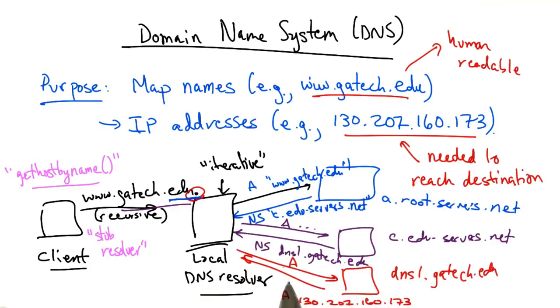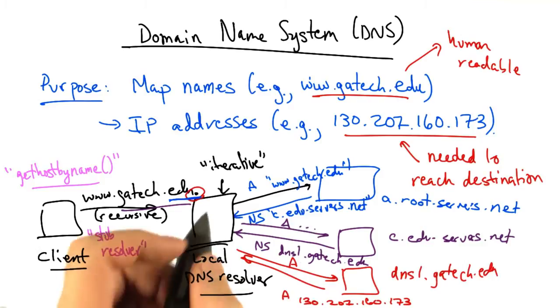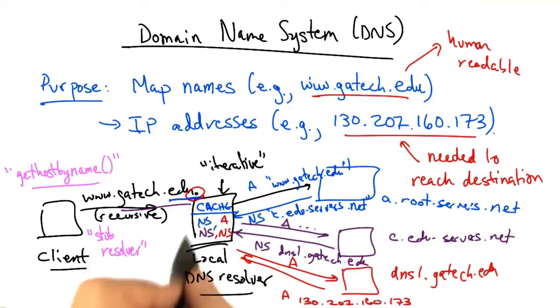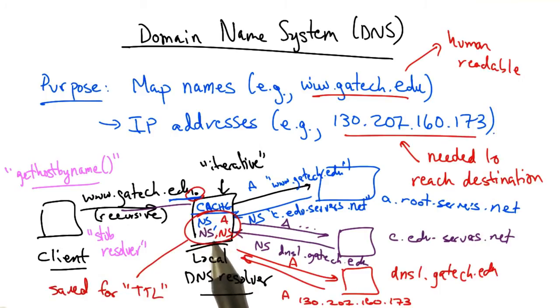Now supposing we wanted to save the extra time and trouble of these round trip times, this local resolver would typically have a cache. It stores the NS records for each level of the hierarchy, as well as the A records. And each of these answers would be stored or cached for a particular amount of time.